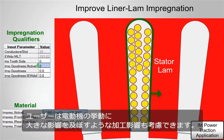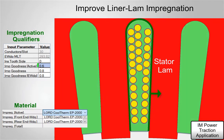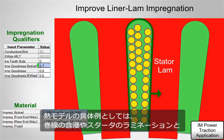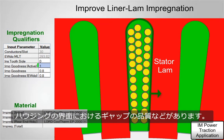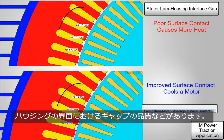MotorCAD enables users to account for the manufacturing effects that could significantly affect a machine's behaviour. Examples in the thermal model include the quality of the impregnation in the winding and the interface gap between the stator lamination and housing.